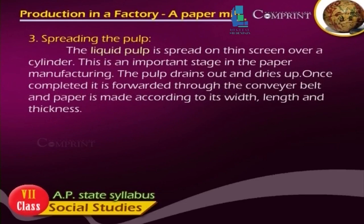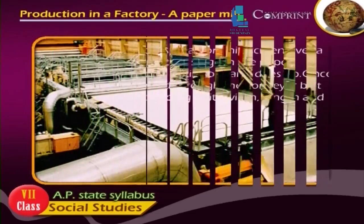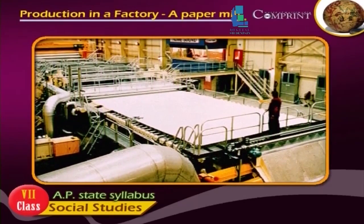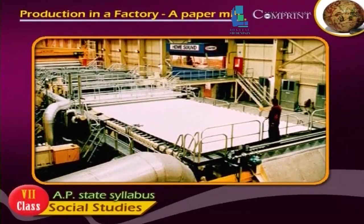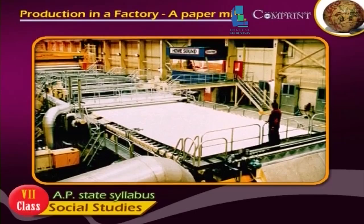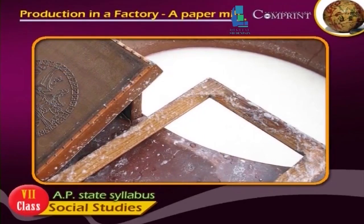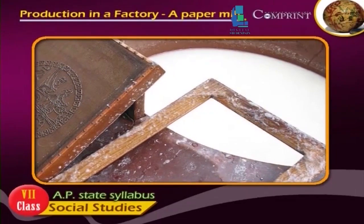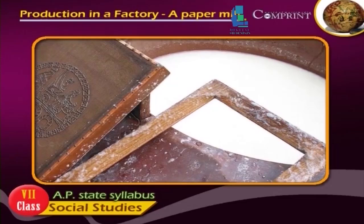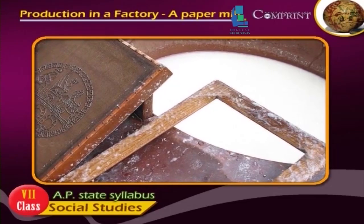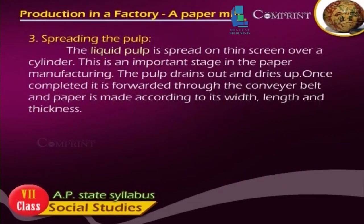Stage 3 — Spreading the Pulp: The liquid pulp is spread on a thin screen over a cylinder. This is an important stage in the paper manufacturing. The pulp drains out and dries up. Once completed, it is forwarded through the conveyor belt, and paper is made according to its width, length, and thickness.